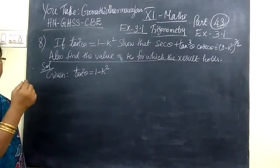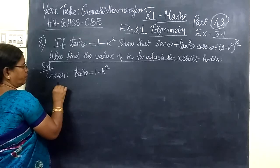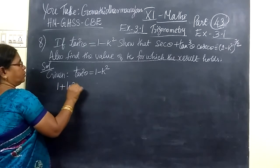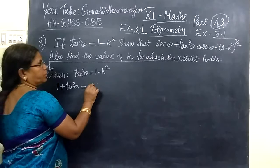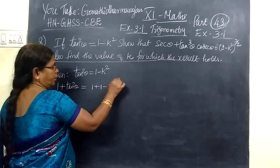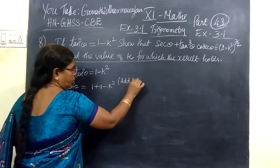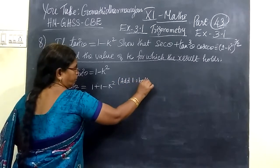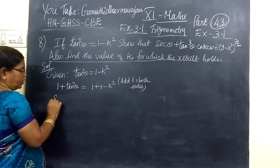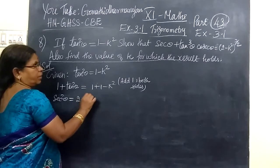Now, if we write 1 plus tan θ equal to 1 minus k square, adding 1 on both sides — add 1 on both sides — then 1 plus tan θ gives us the next expression.